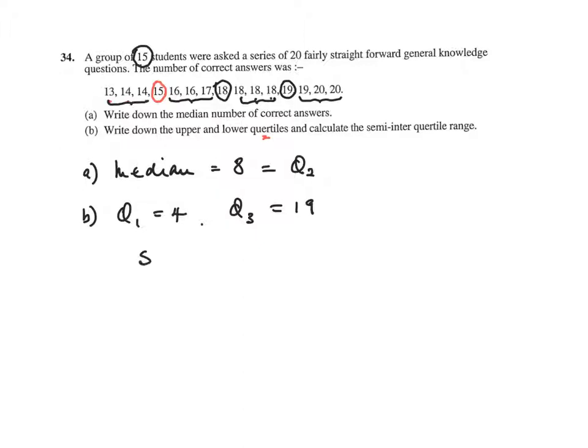Semi-interquartile range is found by using the formula Q3 take away Q1 over 2. So it's 19 take away 4 over 2. 15 over 2 is 7.5.